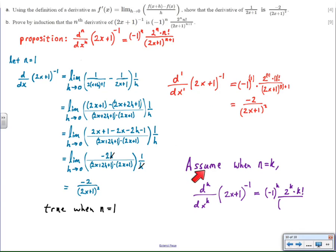My next job is to assume that the statement is true when n equals k. So the kth derivative of 2x plus 1 to the negative 1 is equal to this according to my assumption.